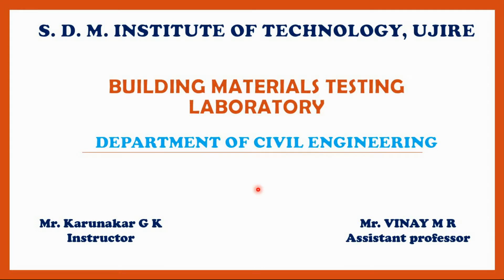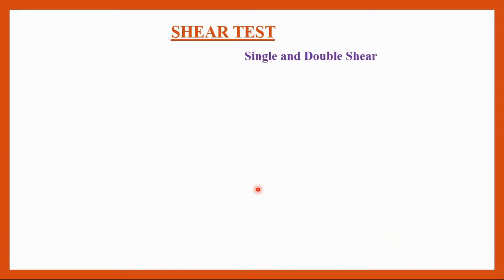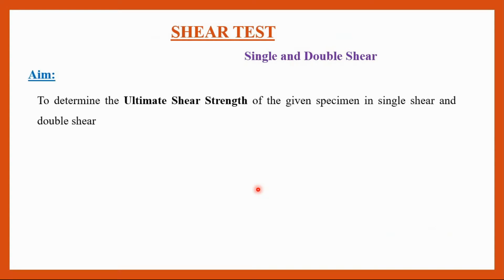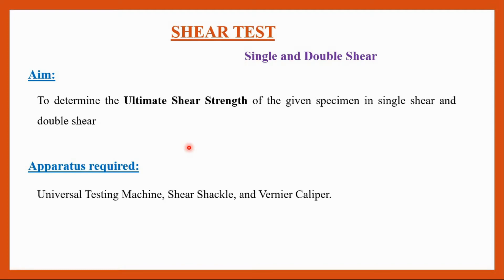Hello everyone, welcome to the building material testing laboratory video lecture. Today we are going to discuss the experiment on shear test. In that we are having two cases: single shear and double shear. The aim of the experiment is to determine the ultimate shear strength of the given specimen in single shear and double shear. The apparatus required includes the specimen, universal testing machine, shear shackle, and vernier caliper for measurement of the diameter.